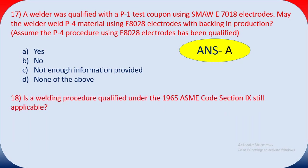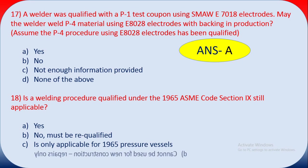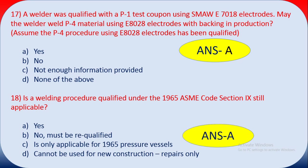Question eighteen: is a welding procedure qualified under the 1965 ASME code Section 9 still applicable? Options: A yes, B no — must be re-qualified, C only applicable for 1965 pressure vessels, D cannot be used for new construction — repair only. The answer is A — yes, a welding procedure qualified under the 1965 ASME code Section 9 is still applicable.